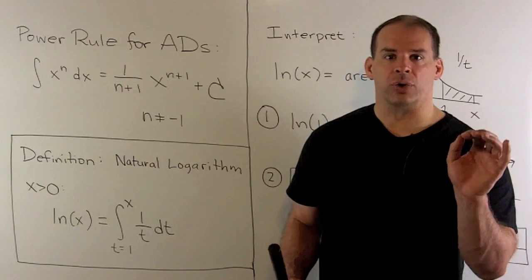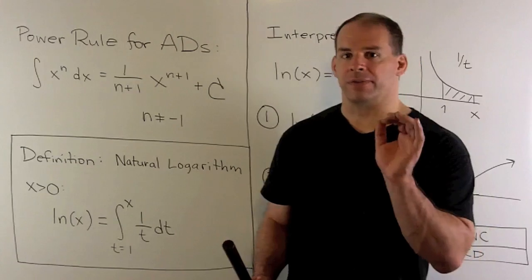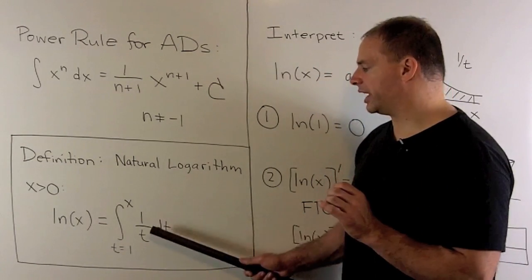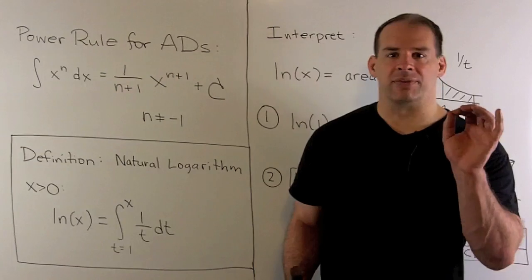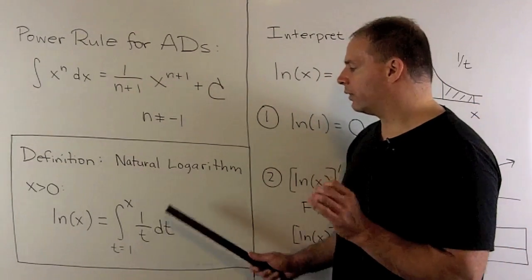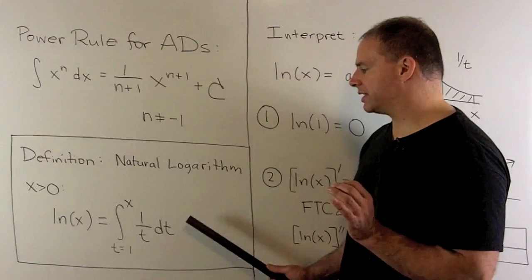To get your antiderivative, what do you do? You take your function, we'll switch the variable to t, so I'll have 1 over t. Then, we're going to take the definite integral, as t goes from, in this case, 1 to x, of 1 over t with respect to t.